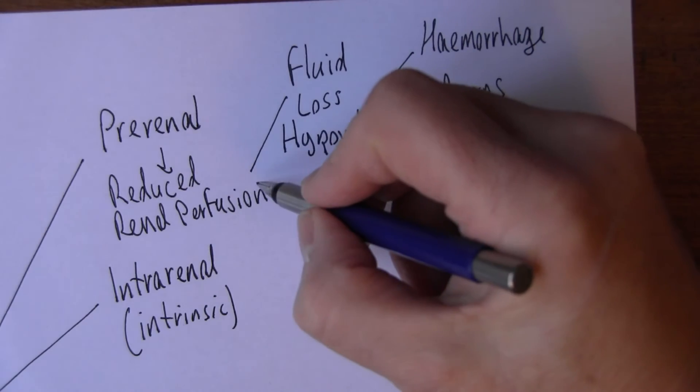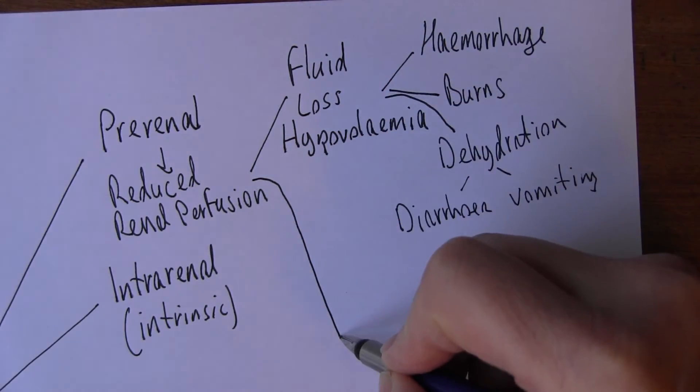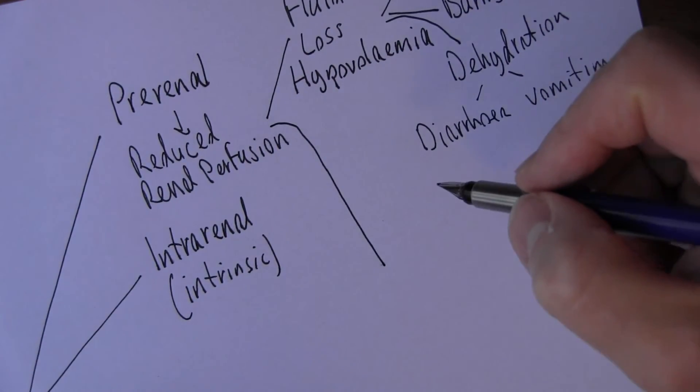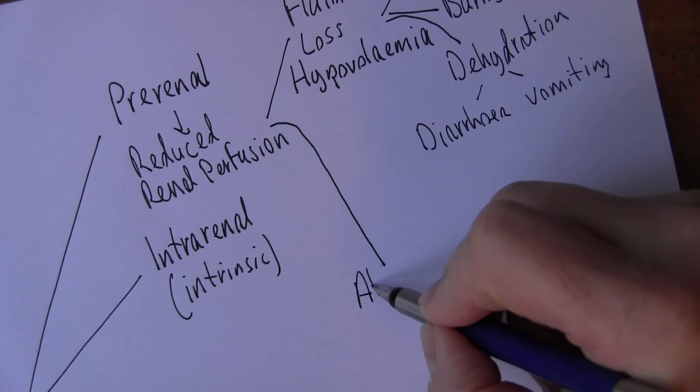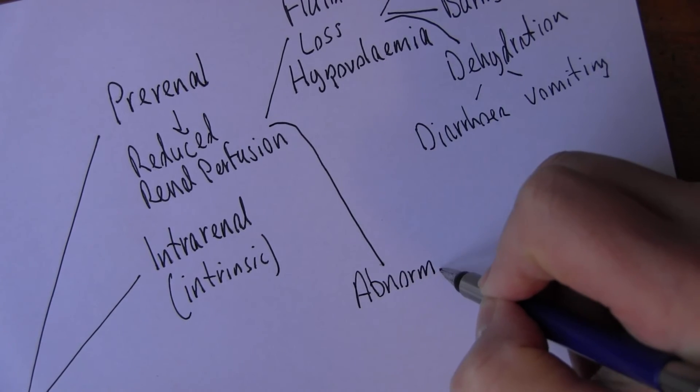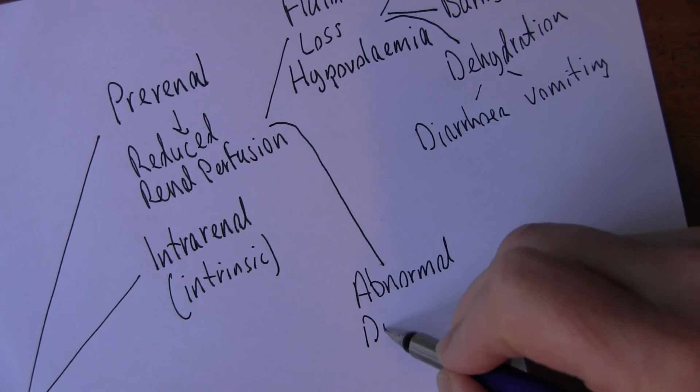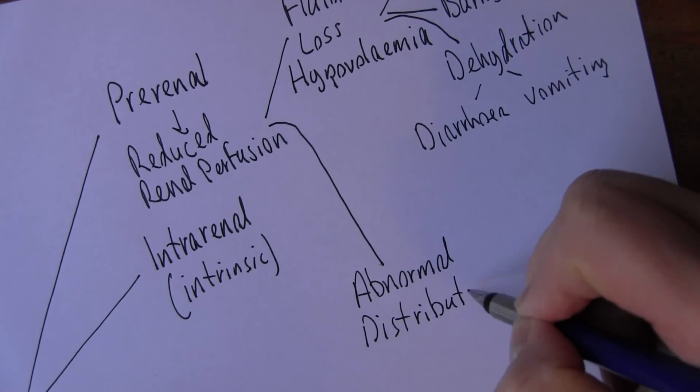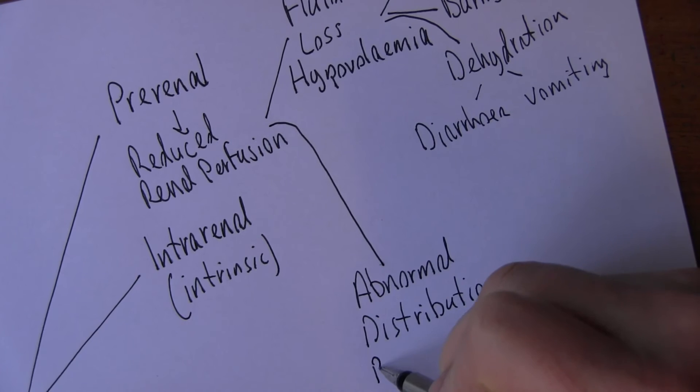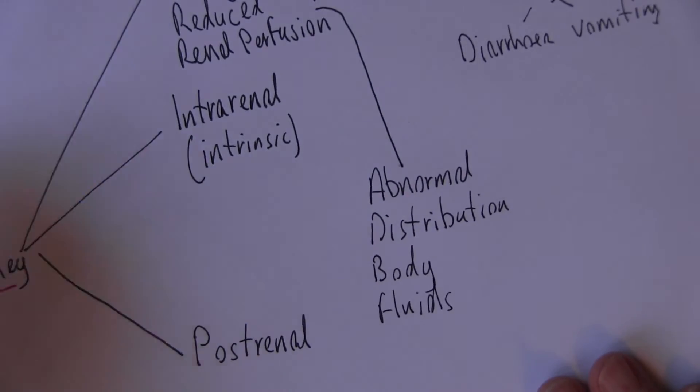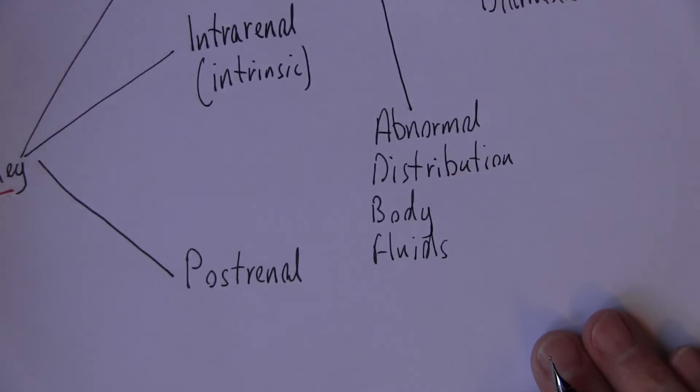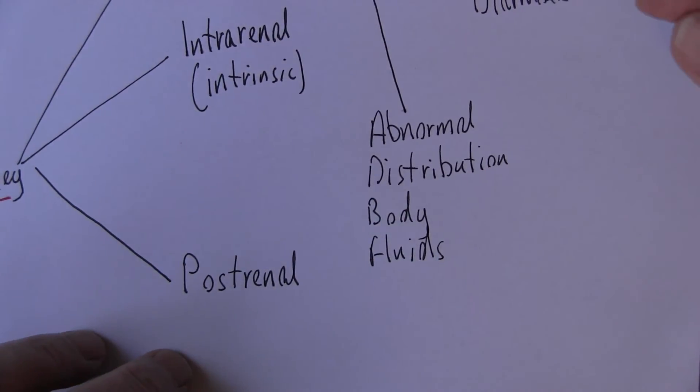But as well as fluid loss, there can also be abnormal distribution of body fluids. So it's kind of like there can be enough fluid there, it's just that the fluid is in the wrong place. So why might this happen?